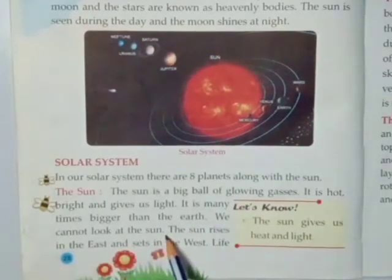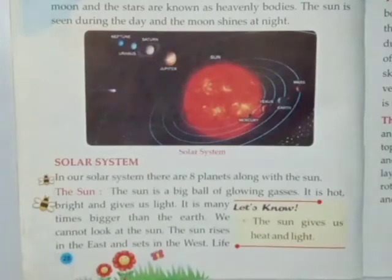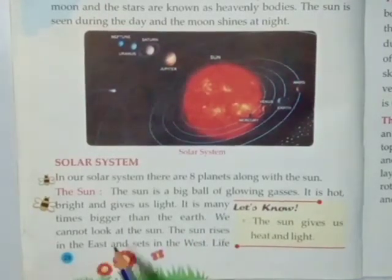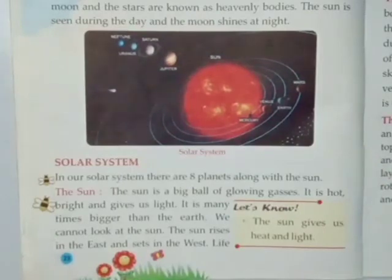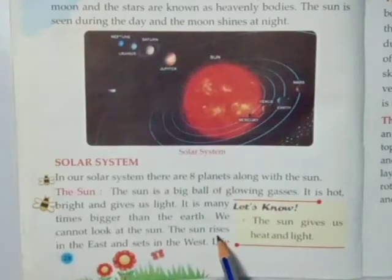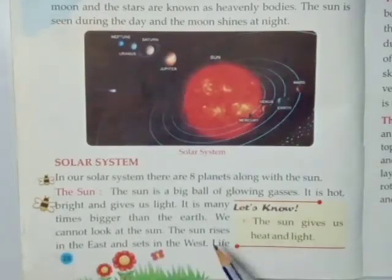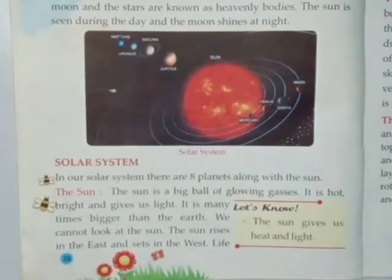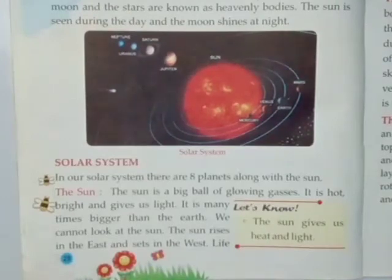We cannot look at the sun. Aapne kabhi sun ki taraf dekha hai? Dekh nahi pate hai, kyunki uski heat bhoat deh jati hai — woh hamaari aankho ko chup jate hai. The sun rises in the east and sets in the west. East hoota hai purv, west hoota hai pashchim. Toh sun jo hai, woh purv disha yaani east se rise hona — nikalna, thik hai? Aur sets yaani dubna — kahan chala jata hai? West mein, pashchim mein. Subah east se nikalta hai aur sham hote hote west mein jake dub jata hai.